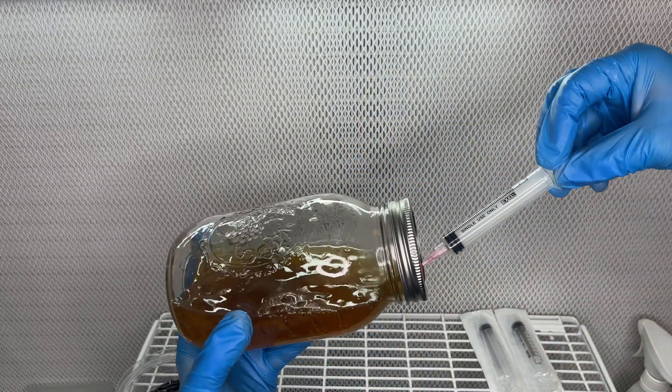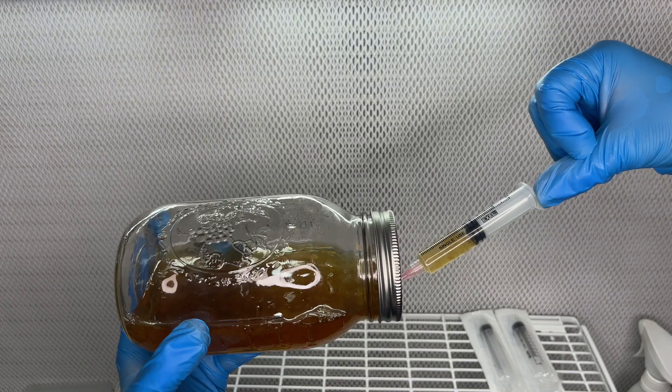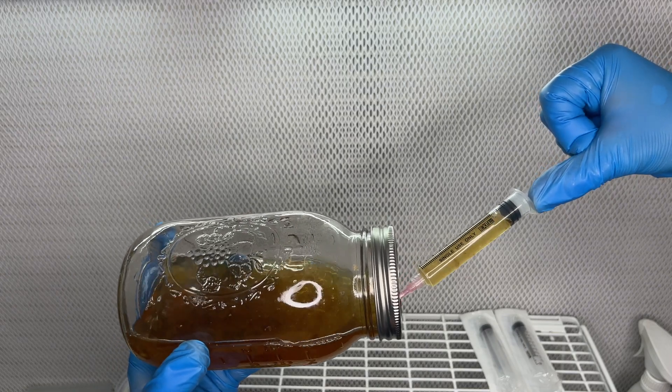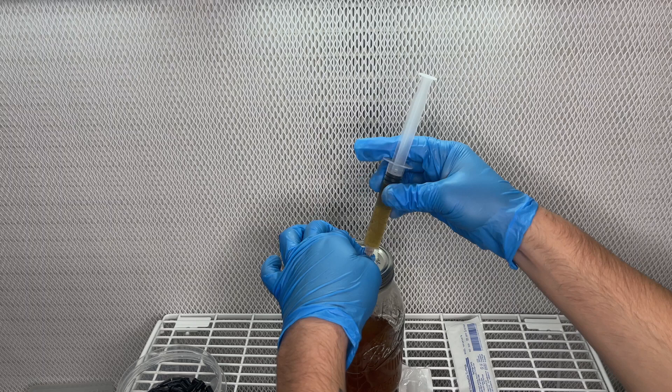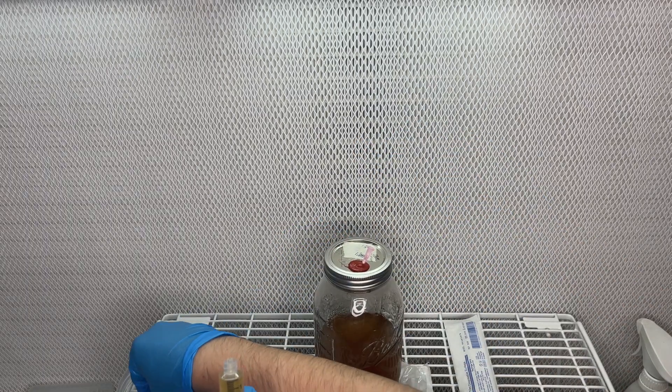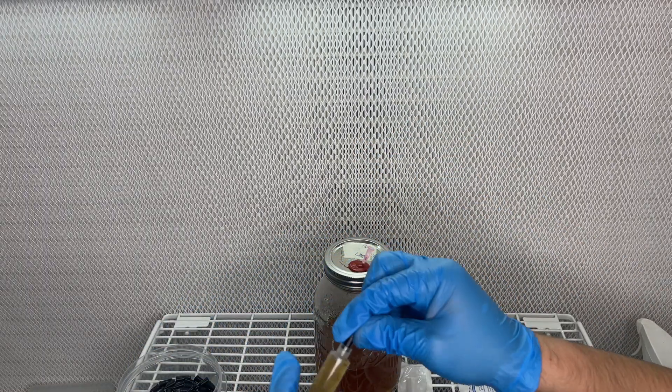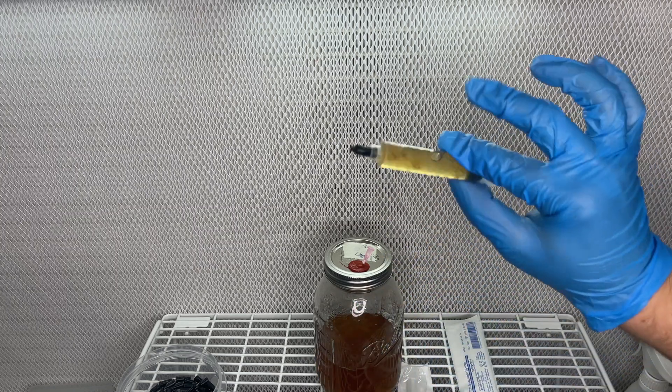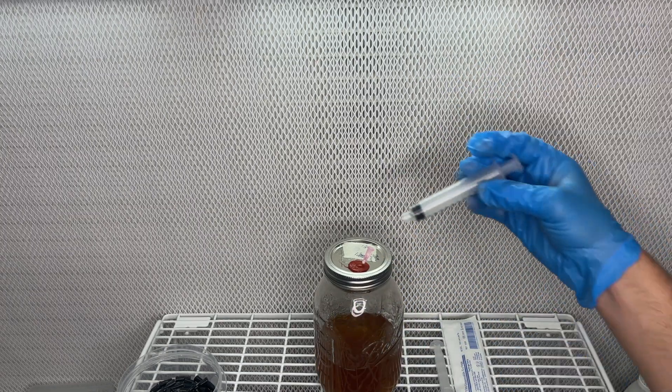After removing all of the extra liquid, you can leave the needle in the injection port and start extracting the mycelium with normal sized syringes. Now it will be much easier to make sure every syringe is almost completely full.